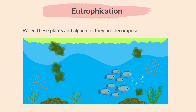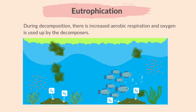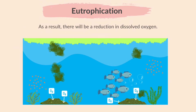When these plants and algae die, they are decomposed by bacteria. Due to the increased amount of producers, there will also be increased decomposition following their death. During decomposition, there is increased aerobic respiration and oxygen is used up by the decomposers. As a result, there will be a reduction in dissolved oxygen.